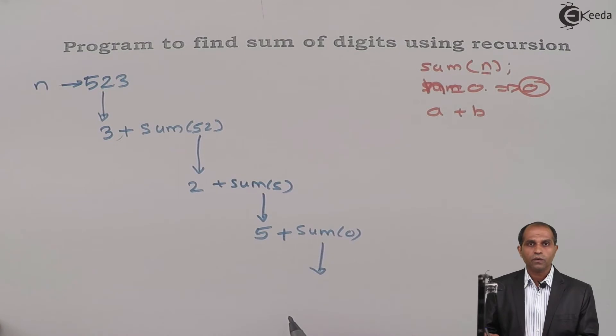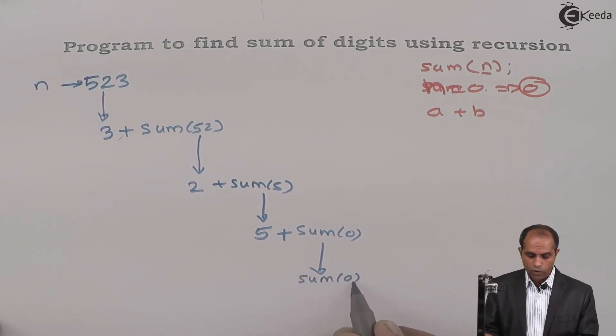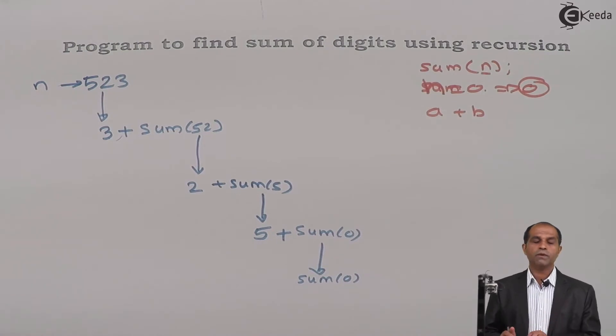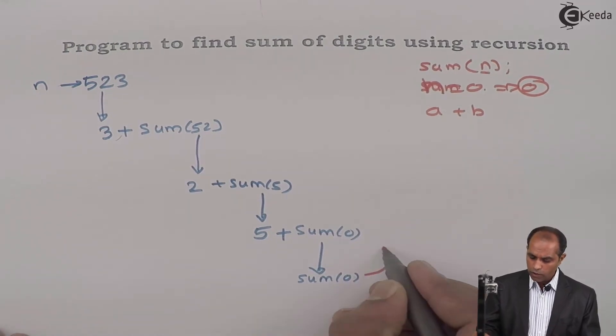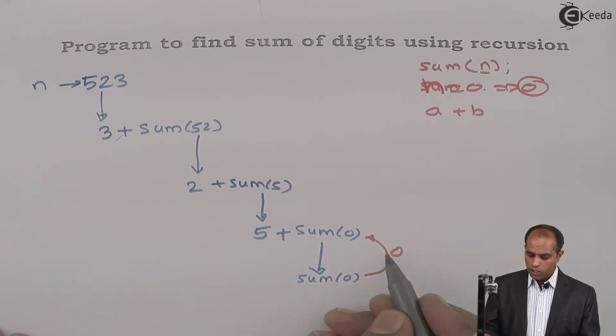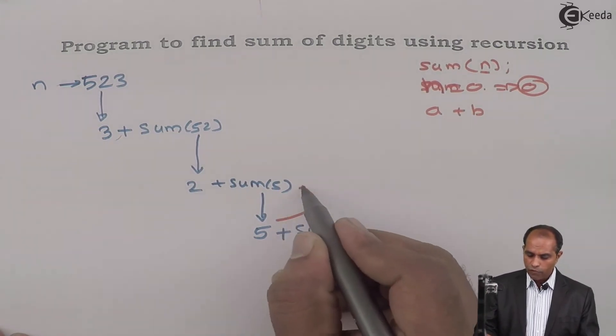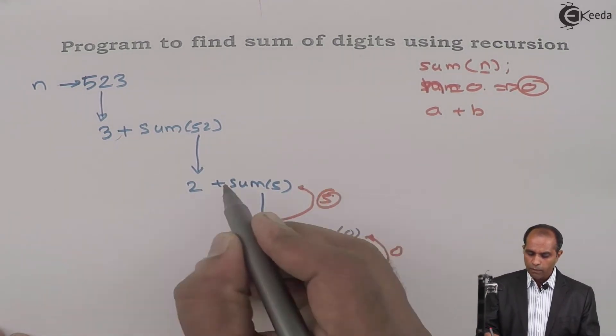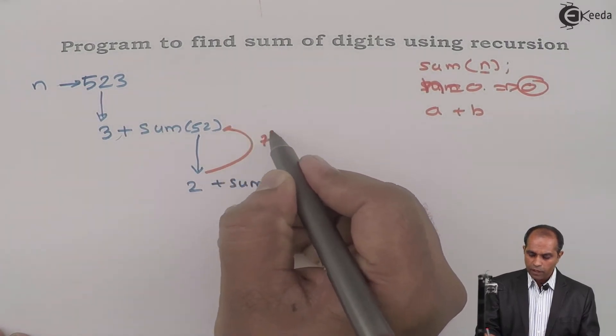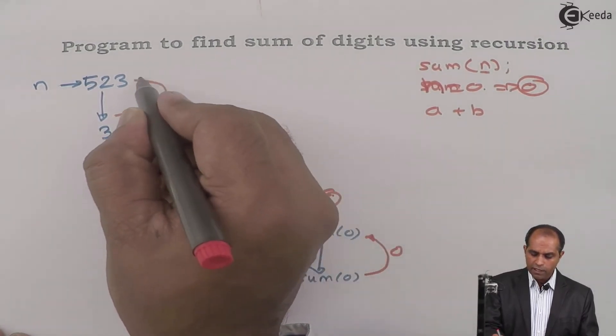What is sum of 0? So when sum of 0 is returned, when you ask me to find sum of 0, I'll say that I know sum of 0. Sum of 0 is 0. The process goes like this: 0 plus 5 is 5, 5 plus 2 is 7, and 7 plus 3 is 10.